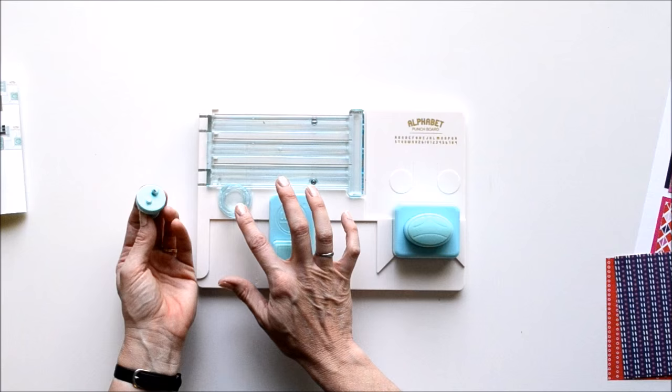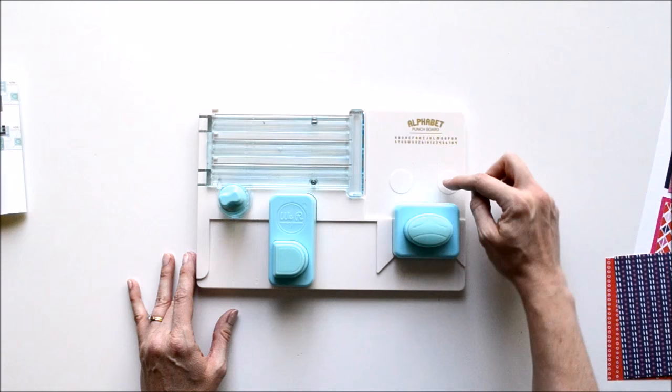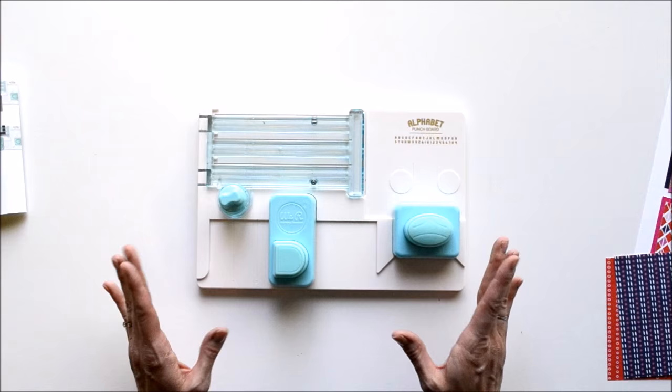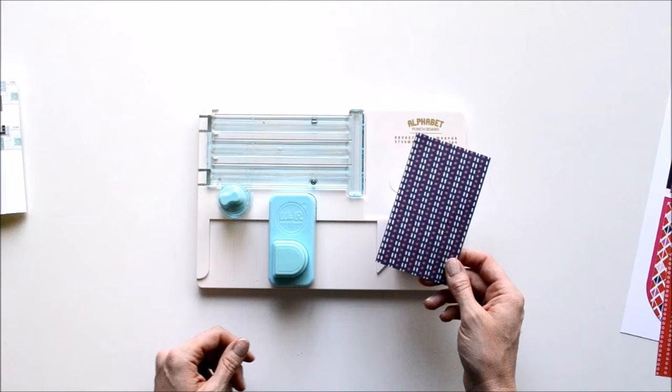Then it's got this nice handy storage place right here. Also here on this punch there are some circles, and those are just to help you line up your letter as you're punching it so it's exactly in the right spot as well.